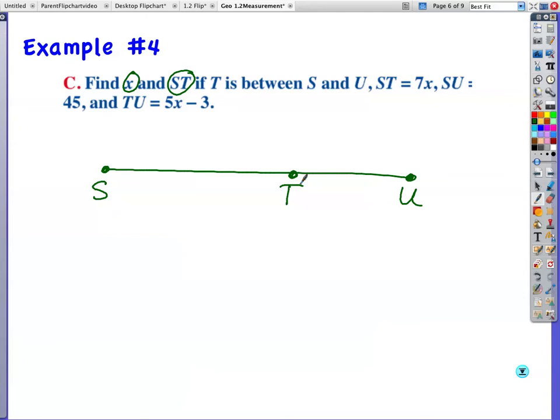Now, we're going to write down ST is 7X. So, I'm going to put that like I did on the previous problem. It was already written there for us. SU is 45. And, TU is 5X minus 3. So, now, let's look at this, the overall picture. If I add these pieces up, 7X plus the 5X minus 3, that should total 45. So, that's how I'm going to write my problem out.